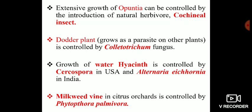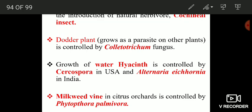Here are some examples of bio-herbicides. The extensive growth of Opuntia can be controlled by introducing its natural herbivore, the cochineal insect — no chemicals needed. If a crop field is invaded by Opuntia, simply introduce the cochineal insect to control it. The second example is dodder plant, which grows as a parasite on other plants and can be effectively controlled by Colletotrichum fungus.